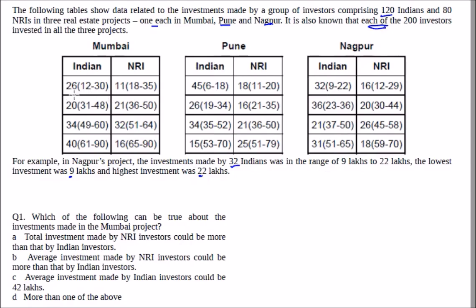The way to read this data: in Mumbai there are 26 Indians who invested between 12 to 30. One of them invested at 12, one invested at 30, and the rest can invest any number from 12 to 30 — it is an actual number, no restriction. Similarly for NRIs: there are 80 of them, and the table shows the range of their investment — minimum and maximum.